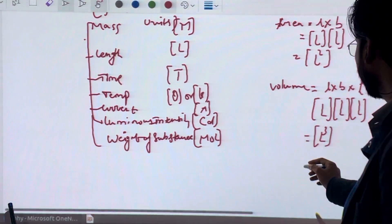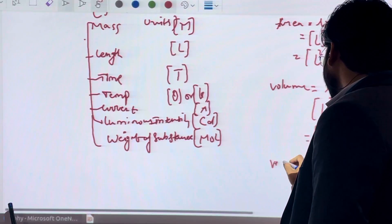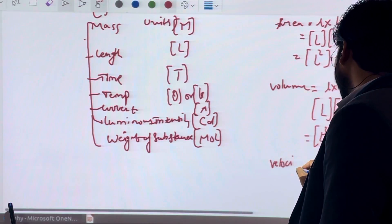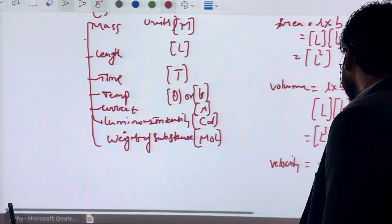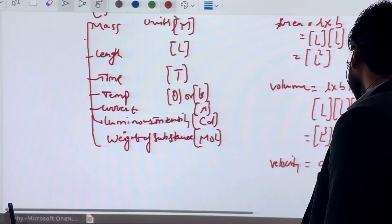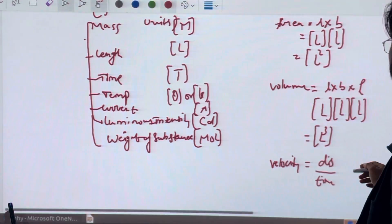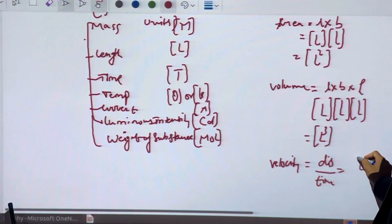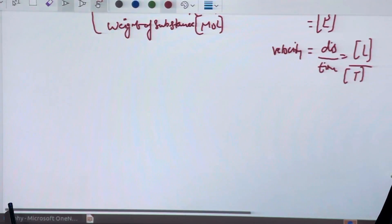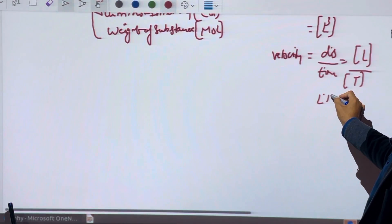Velocity. We know that velocity is displacement upon time. Displacement is also length and time is T, so dimension of velocity is LT minus 1.